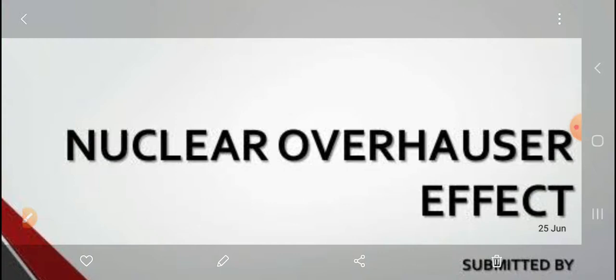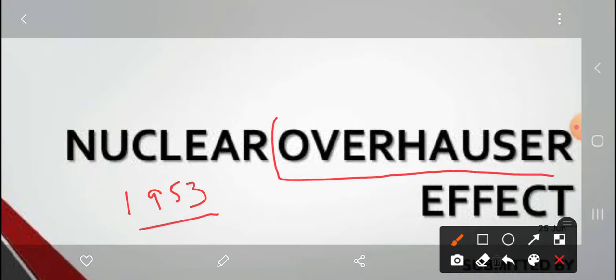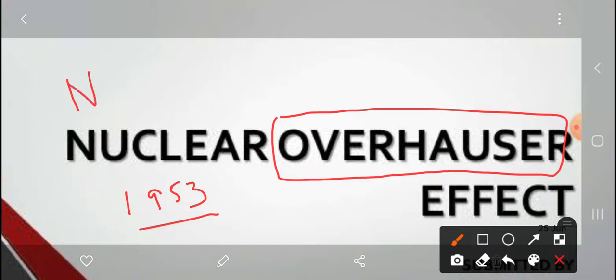The Nuclear Overhauser Effect was described by Overhauser in 1953. Overhauser, the scientist, described this effect. It is named the Nuclear Overhauser Effect and is shortly called NOE — NOE means Nuclear Overhauser Effect.